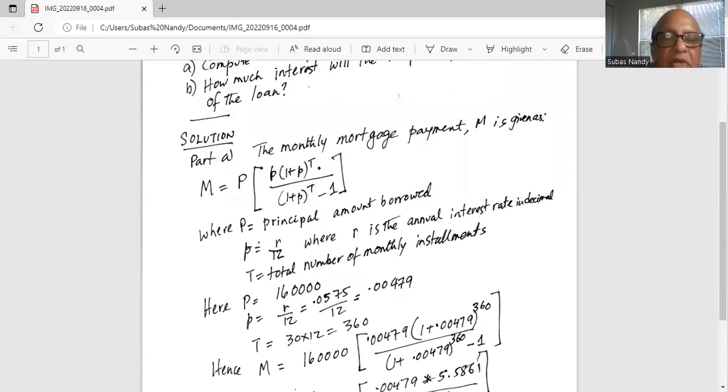In this problem, the principal that we are borrowing is $160,000. So, capital P is equal to 160,000.